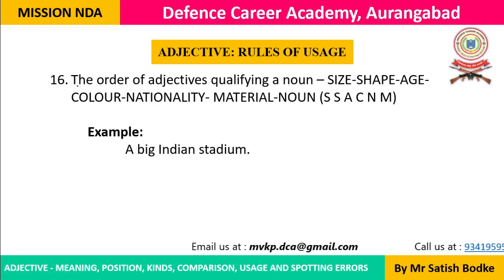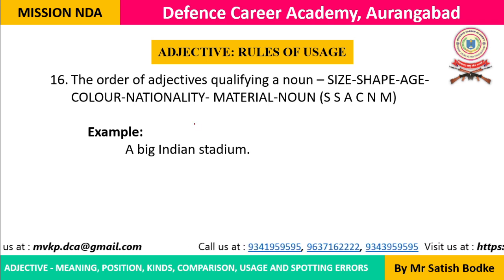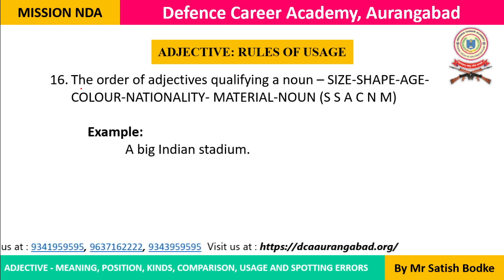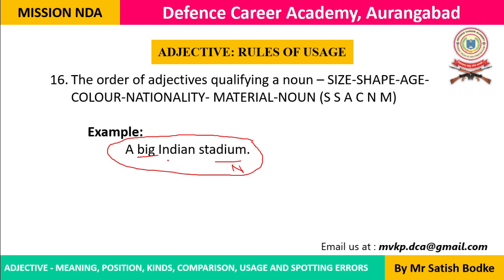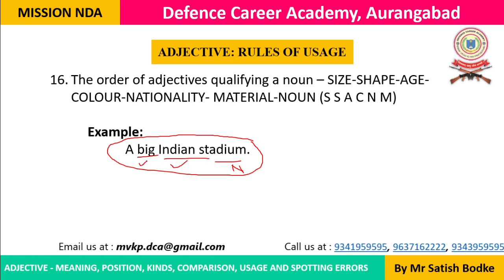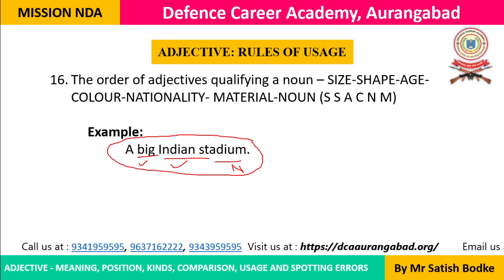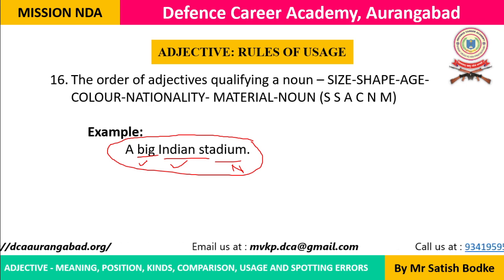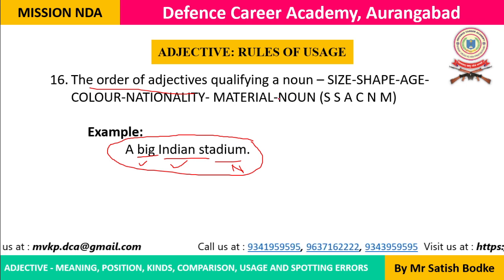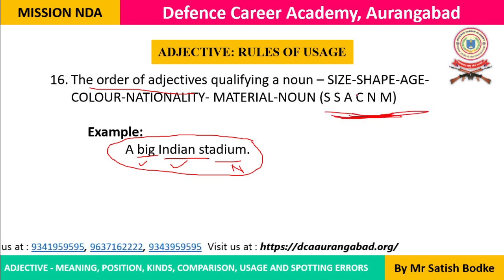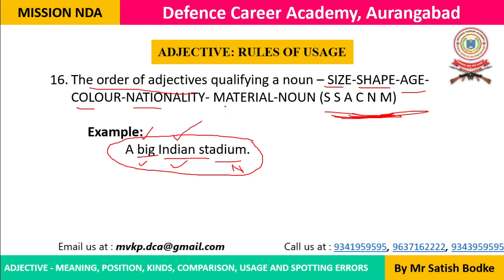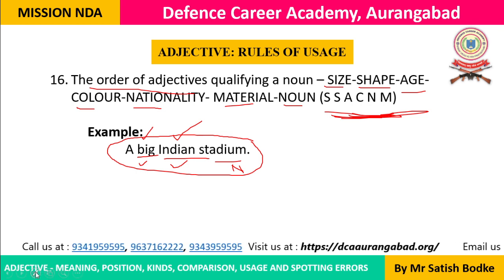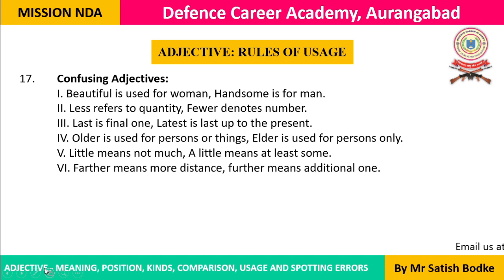Rule 16: The order/sequence of adjectives — when multiple adjectives modify the same noun, they must appear in a fixed order. For example: 'a big Indian stadium' — size adjective (big) comes before origin/nationality adjective (Indian). The correct sequence is: size, then age, then color, then nationality/origin. You cannot reverse this order.